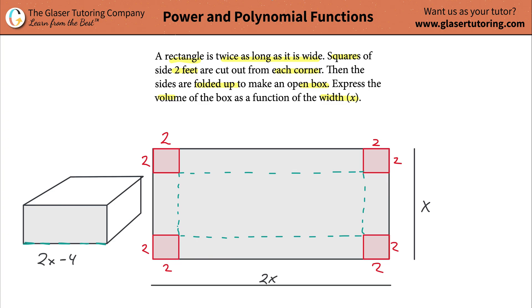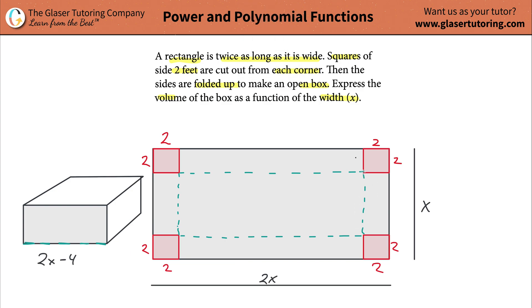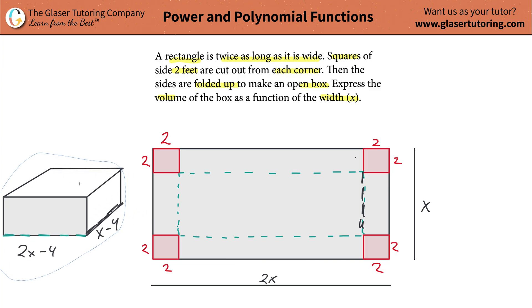This dashed length here would be similar to this dashed length. The overall length of the rectangle at the beginning was x, and then we subtract 4 from it — because 2 and 2 on each side — so that would be x minus 4. Now, what's the height of the box? Imagine you're folding this up — how high will you be folding it? Whatever the length of this cut-out square is. And that's 2. So, the height is 2.